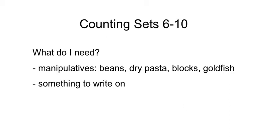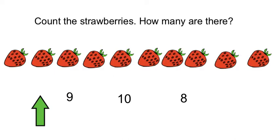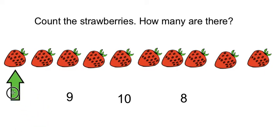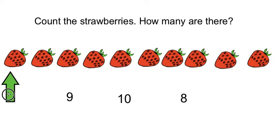So let's get started. Count the strawberries — how many are there? Make sure your pointer finger is ready; you can wiggle your pointer finger. You are going to touch each strawberry one time to count. We count from left to right, so we are going to start here. Watch me count first and then you can help me count.